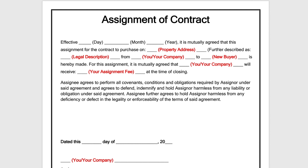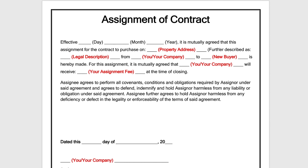Further described as — you want to put in the legal description. This is going to be found at the tax assessor or REI Pro at step one, where it's going to be lot one, block two, subdivision of this, and so forth. Sometimes it's crazy language, but you just have to put it in letter by letter, number by number.